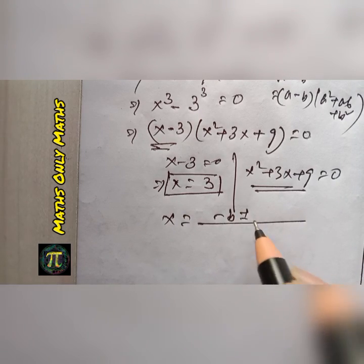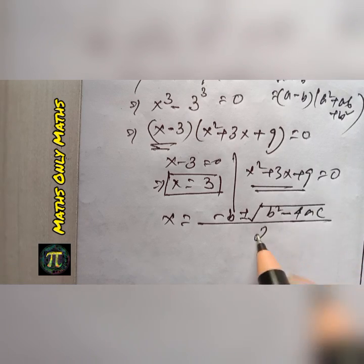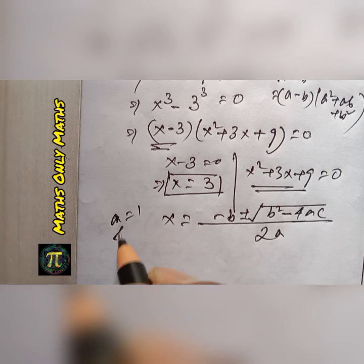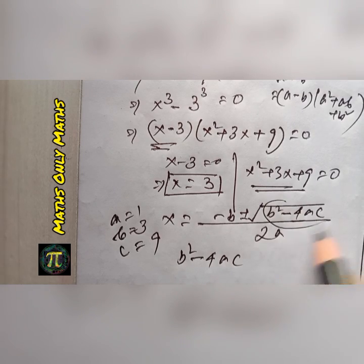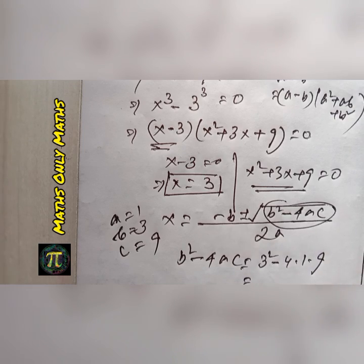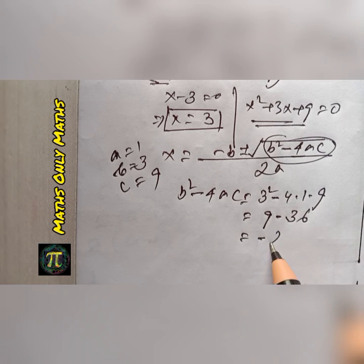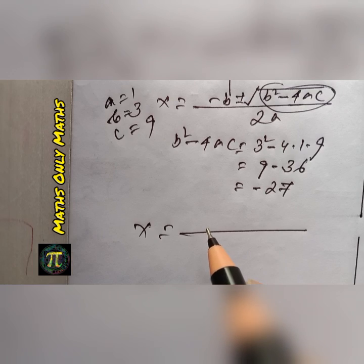The quadratic formula is x = (-b ± √(b² - 4ac)) / 2a. Here a = 1, b = 3, c = 9. Let's find the discriminant: b² - 4ac = 3² - 4(1)(9) = 9 - 36 = -27.